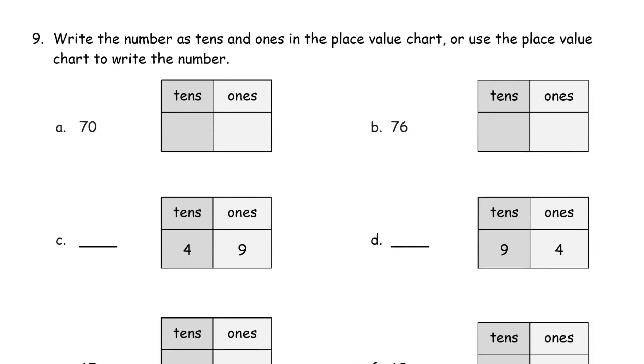Write the number as tens and ones in the place value chart, or use the place value chart to write the number. So they're going to give you one or the other. Seventy is seven tens and zero ones. And seventy-six is seven tens and six ones.